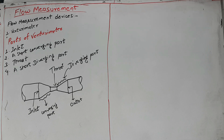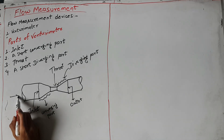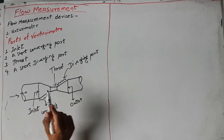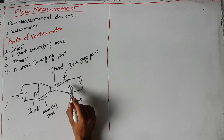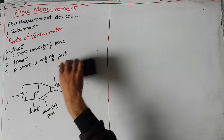This is the venturimeter. It is used to measure the flow of liquid. Suppose the liquid is entering from the inlet side and exiting at the outlet. Now we will do a derivation for the rate of flow through a venturimeter.